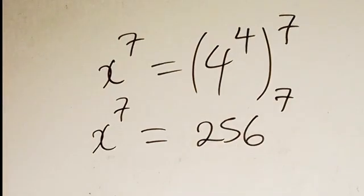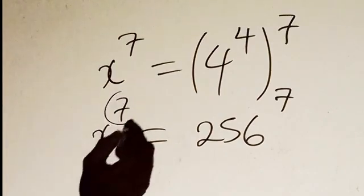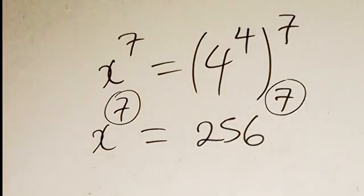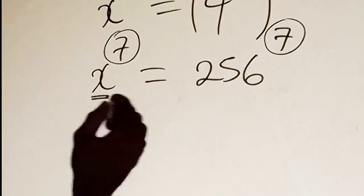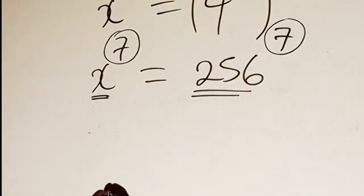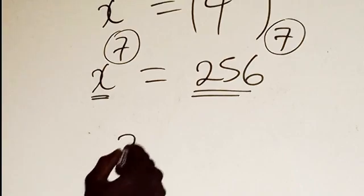We have 256 all to the power of 7. So now for the fact that this and this are the same, the powers are the same thing, so we're going to equate the base. We're going to have x to be 256.